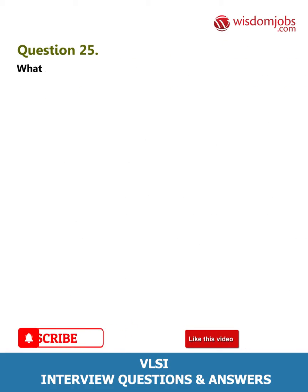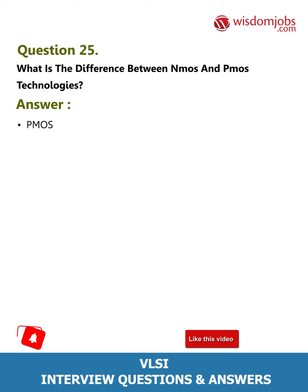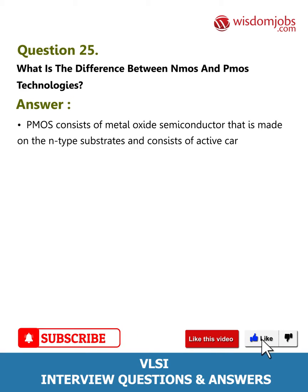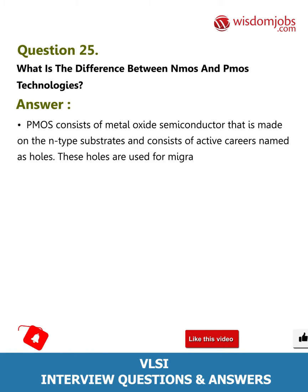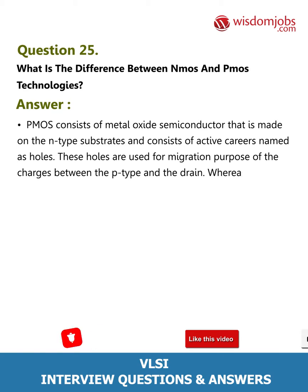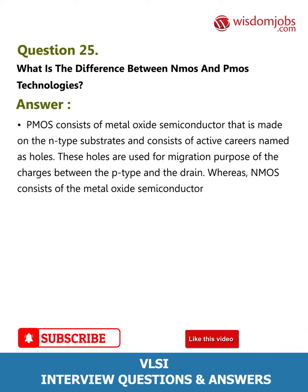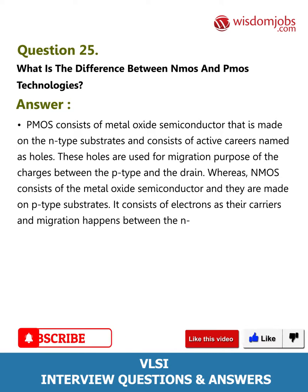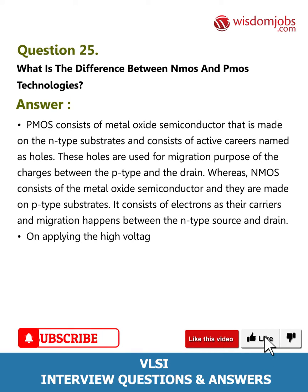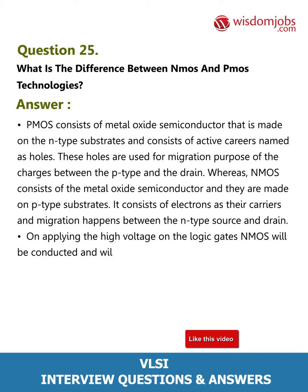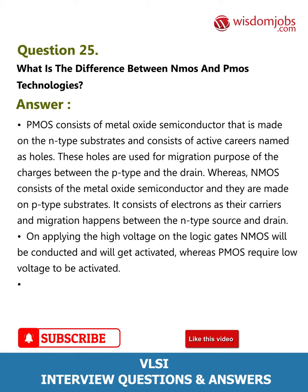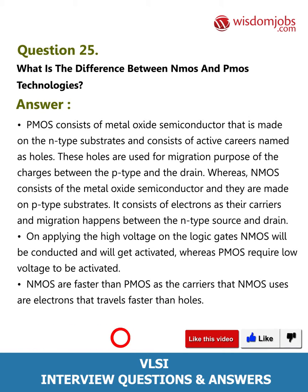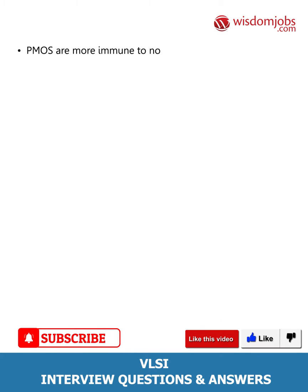Question 25: What is the difference between PMOS and NMOS technologies? PMOS consists of metal oxide semiconductor made on N-type substrates and consists of active carriers named as holes, used for migration of charges between the P-type source and drain. NMOS consists of metal oxide semiconductor made on P-type substrates, with electrons as their carriers, and migration happens between the N-type source and drain. Applying high voltage on the logic gates activates PMOS, whereas NMOS requires low voltage to be activated. NMOS is faster than PMOS as electrons travel faster than holes — twice as fast. PMOS is more immune to noise than NMOS.